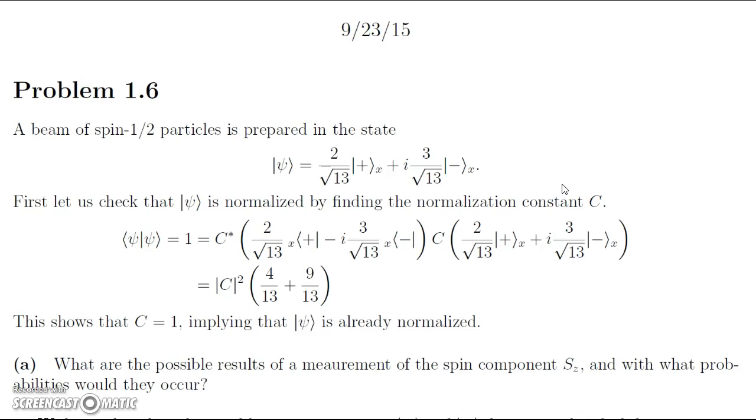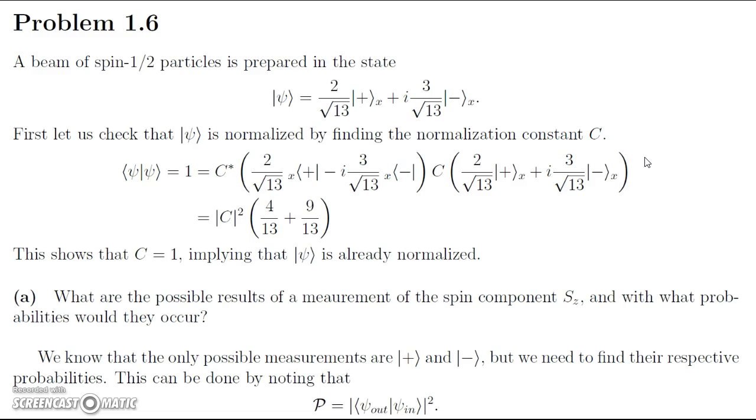Before we go on to that, we're first going to check that this state is normalized by finding the normalization constant c. Typically, these states are normalized prior for us. However, it is good to check so we don't have to do any extra work later on. Basically here we just take the inner product of the state psi with itself and set it equal to 1. To do this, to get the corresponding bra, we take the Hermitian conjugate, and we get a c star. We also change the sign on this coefficient here. And then when we multiply through, the c star and c become this coefficient c modulus squared.